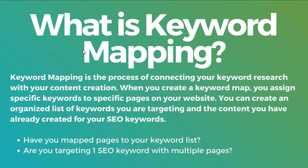Basically when you're creating a keyword map, you're assigning keywords to pages on your website. These are the keywords that we are targeting with this page, and what you're trying to do is not just target keywords but solve for search intent based on what people are typing in. So the page of content on your website is trying to solve for search intent. You want to create an organized list of keywords you're targeting and also link together the content you've created for those SEO keywords.